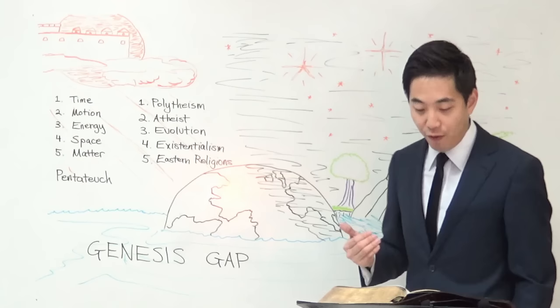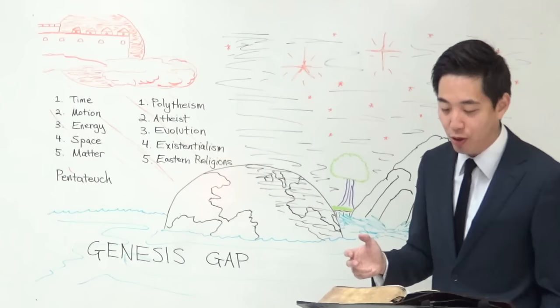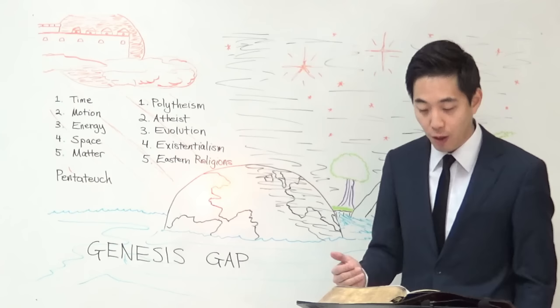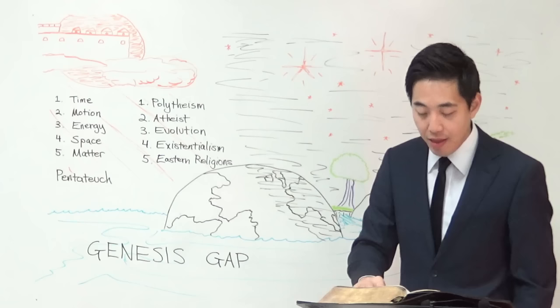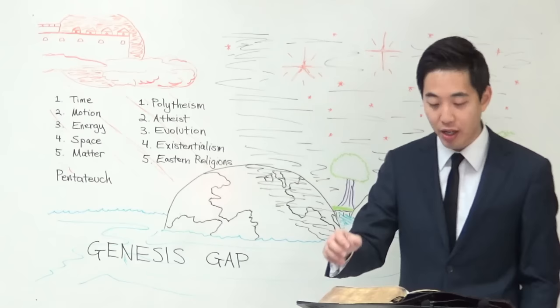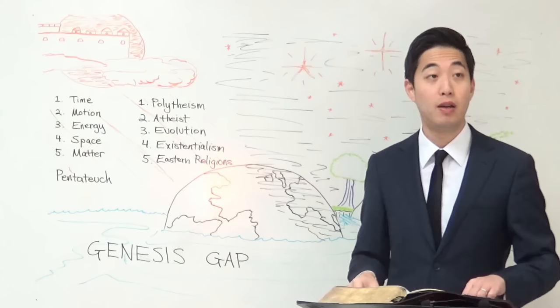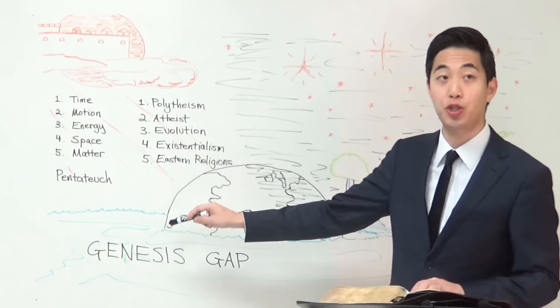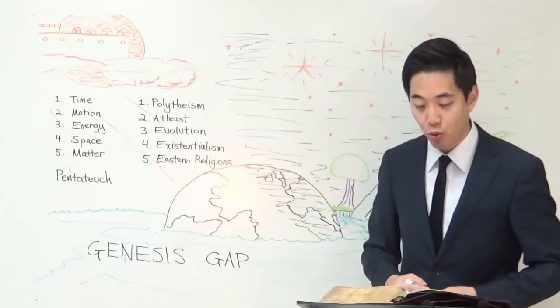Another reason people feel uneasy is that it seems like too much to put between verse 1 and verse 2 — Lucifer, the sons of God, a universal destruction, and then verse 3 being the six days of creation. But that's why we call it the Genesis Gap: there is a gap between verse 1 and verse 2, and between verse 2 and verse 3. The gap is filled by Lucifer, the sons of God, and the universal destruction.